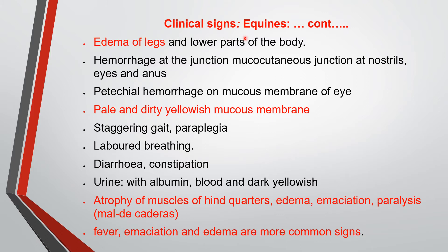Continuing clinical findings in equines: edema of the legs and lower part of the body is an important symptom. Hemorrhage is found at the mucocutaneous junction — where mucous membrane meets skin — generally at the nostril, eyes, and anus. Petechial hemorrhage on the mucous membrane of the eye occurs because of high fever and toxemia. Pale and dirty yellowish mucous membranes are observed — paleness suggests anemia, and yellowish color suggests icterus.